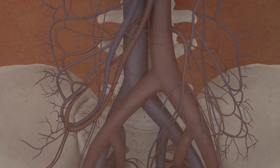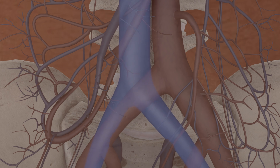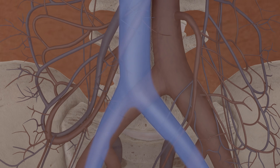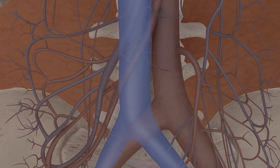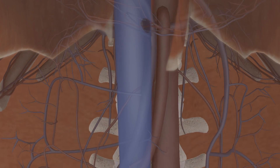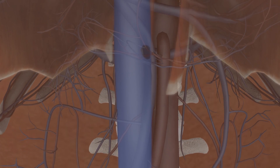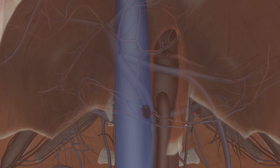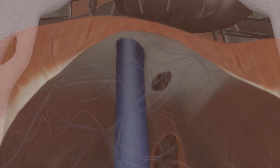The common iliac veins unite to form the inferior vena cava, or IVC. It typically ascends to the right of the abdominal aorta. The IVC leaves the abdomen through the caval opening in the diaphragm.